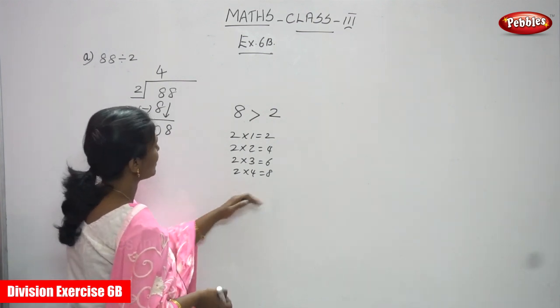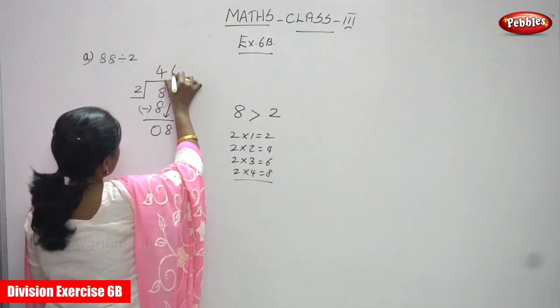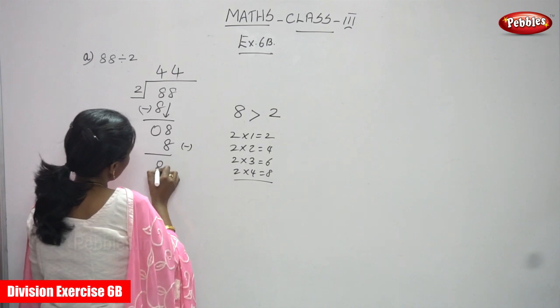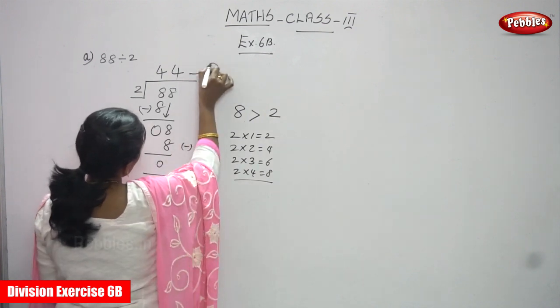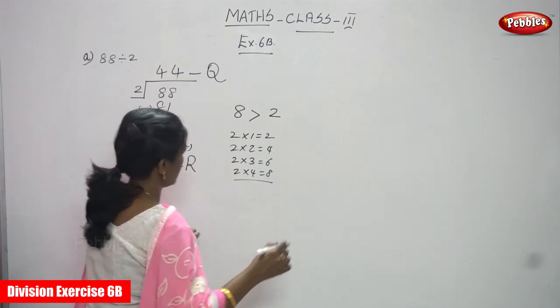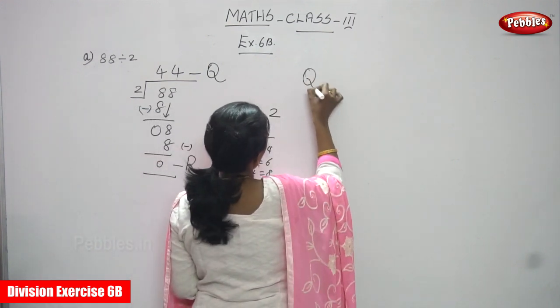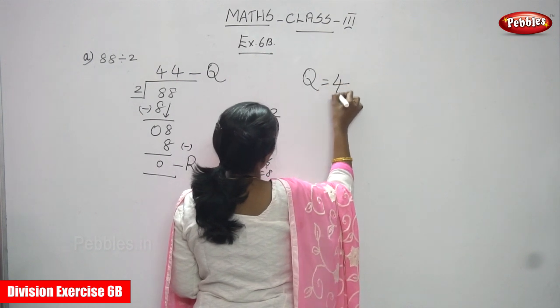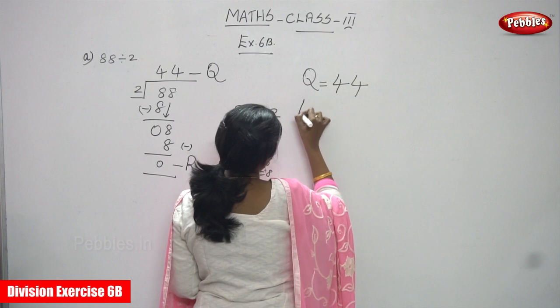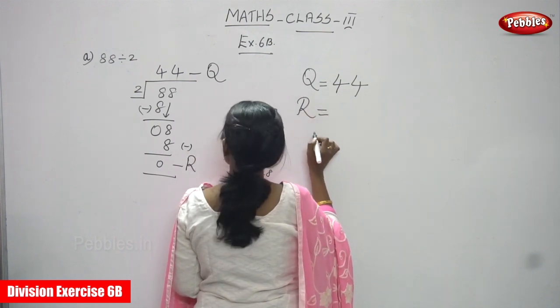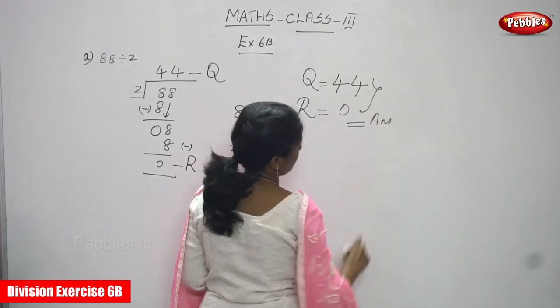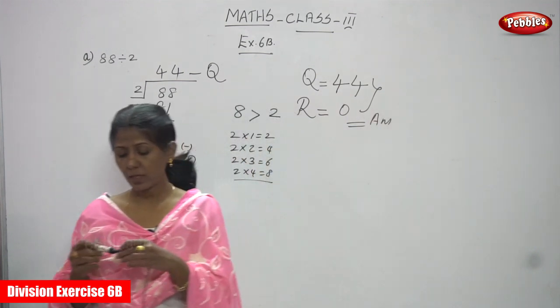So this is a quotient and this is a remainder. Okay, that's it. So quotient is 44 and remainder is equal to zero. So this is the answer.